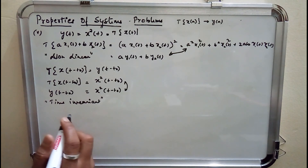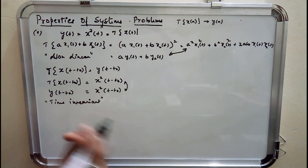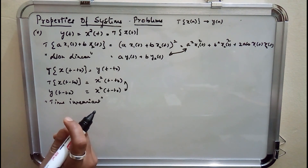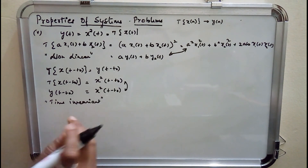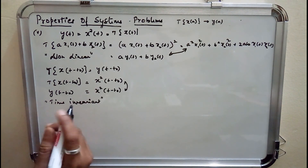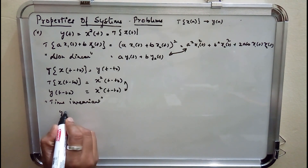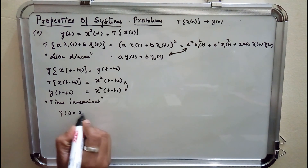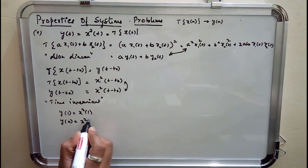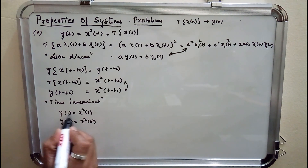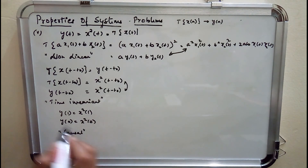The third property is causality. From the definition, output at one instance should depend upon the input at the same or past instance, but not the future instance. Putting values: y(1) = x²(1) and y(0) = x²(0) — output at one instance depends upon the input at the same instance. Hence the system is causal in nature.